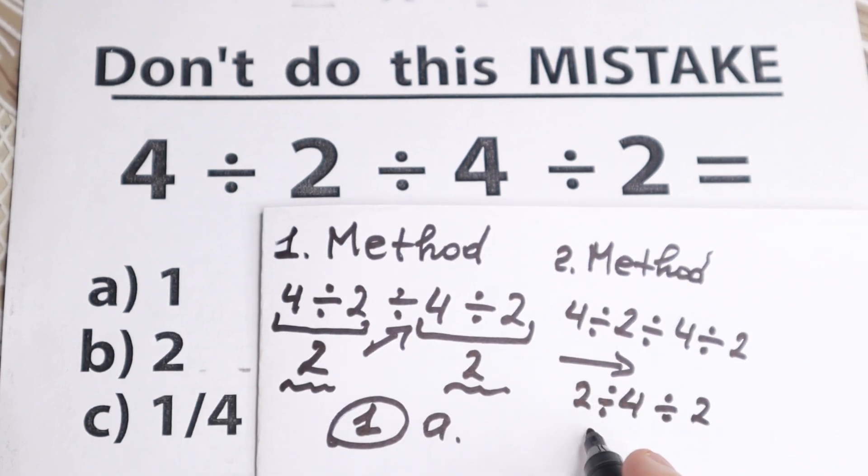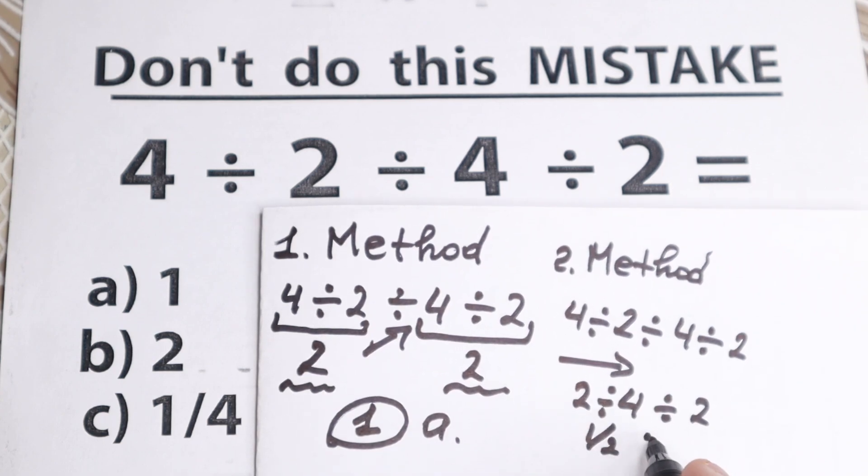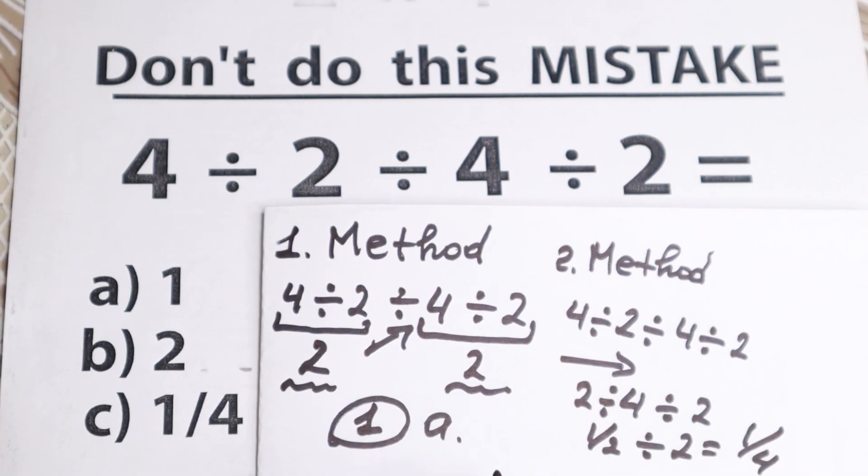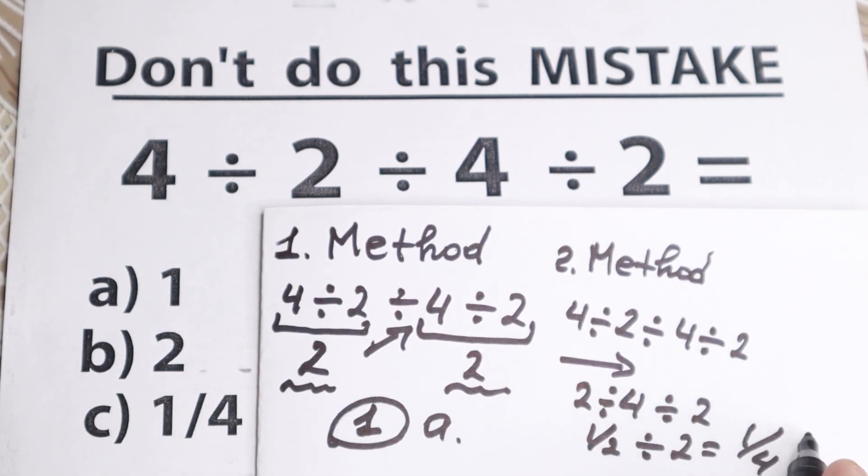2 dividing by 4, this is 1 half, dividing by 2 equal to 1 one fourth. And as you can see, we have this option. This is option C.